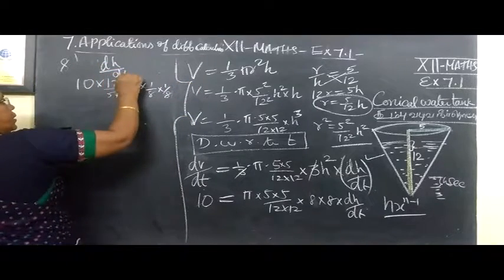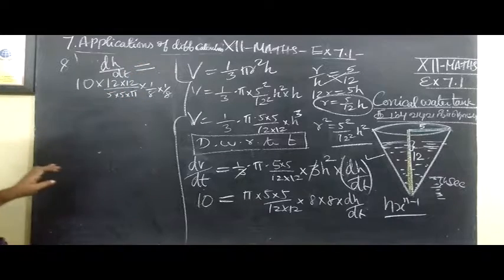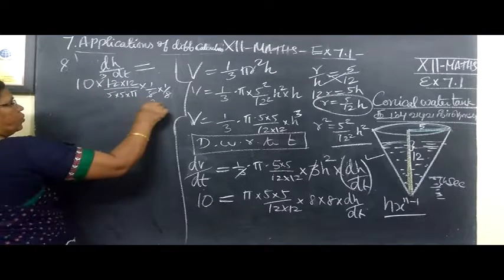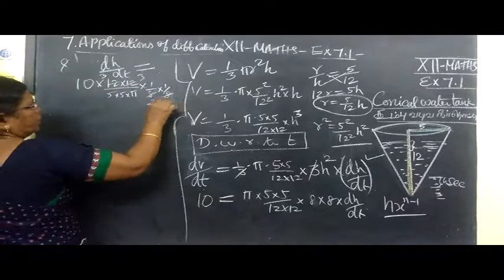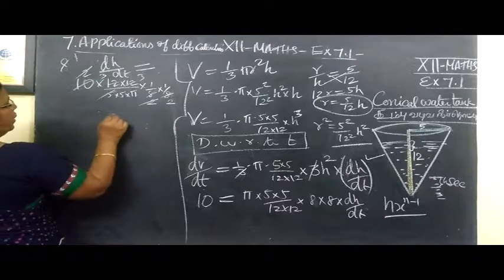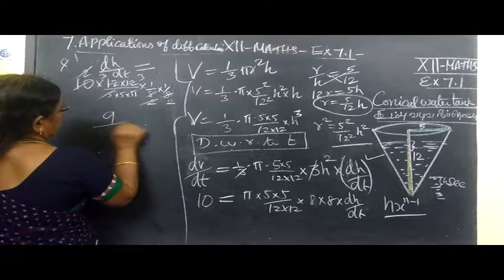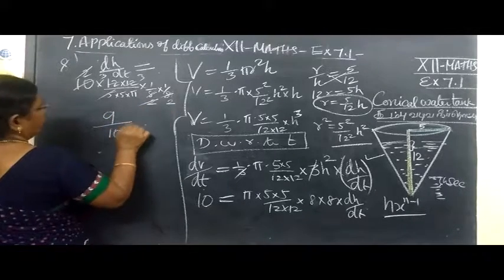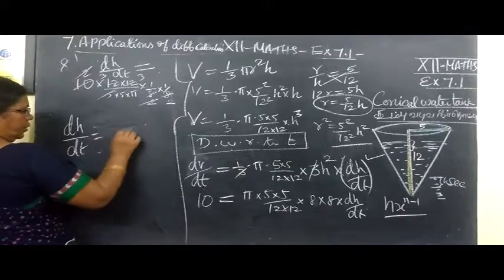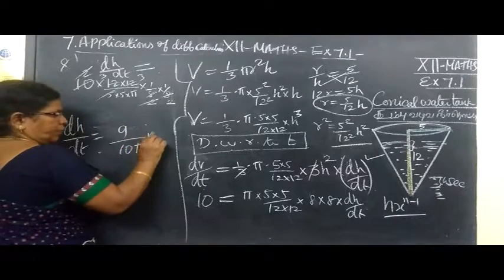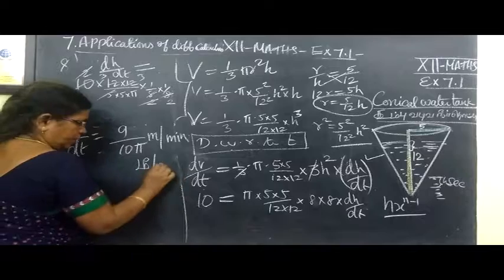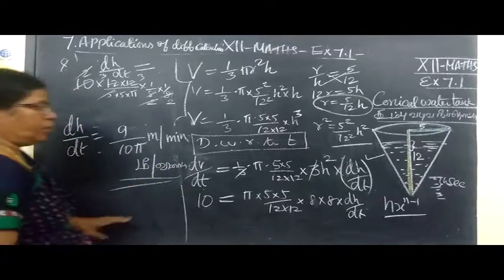The answer is dh/dt equals 1/8. Computing further: 12 into 12 over 5 into 5 into 5 gives us dh/dt equals 9 by 10π times 5. Therefore ds/dt equals 9 by 10 times 5 meter per minute. It's straightforward once we set up the related rates correctly.